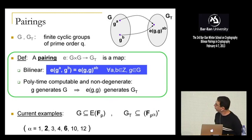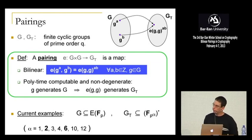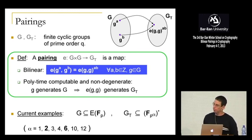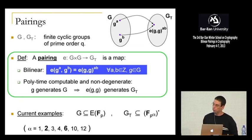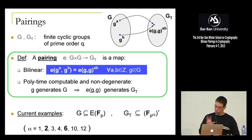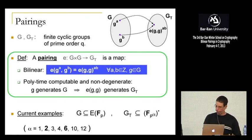Regarding degeneracy: there are cases where you take elliptic curves and try to implement bilinear maps on them and you always map to one. There are many cases where these maps are degenerate. You take care to make sure the map is non-degenerate, but degeneracy does occur in many cases.